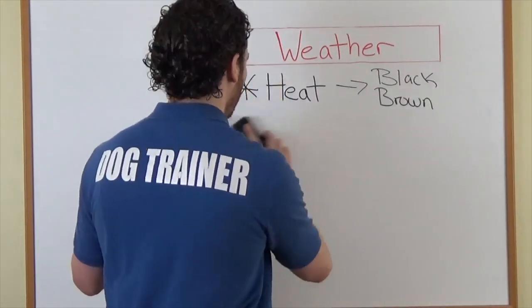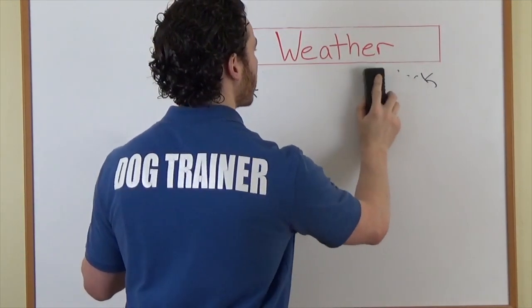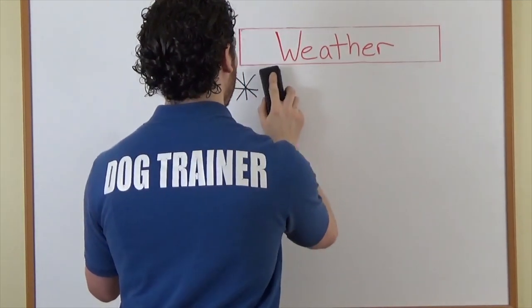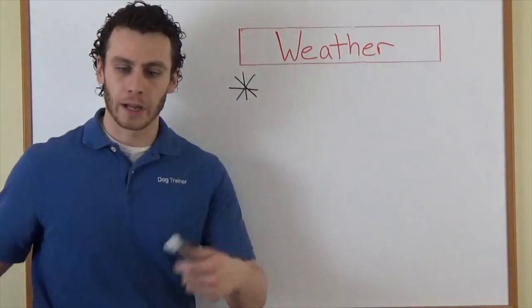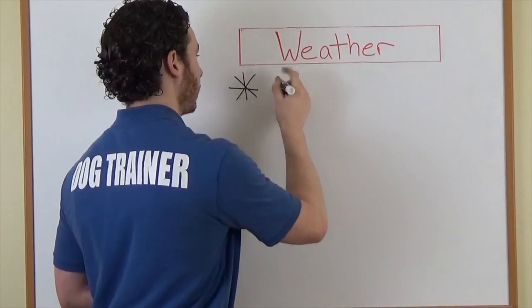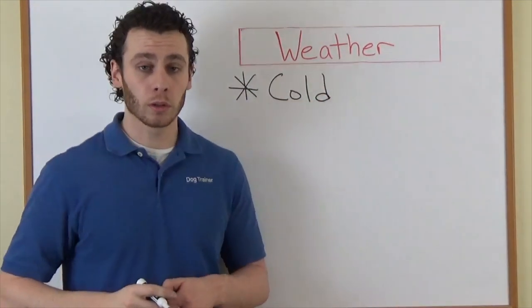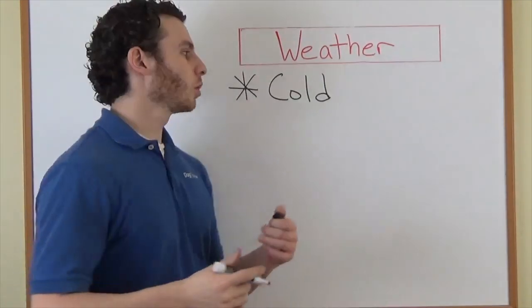On the other spectrum, we have extreme colds. Now, depending where you live, it can get pretty cold. I live in California, so we don't really have anything too extreme here. But for people who live in other parts of the world, it can get really cold to the point where it snows.